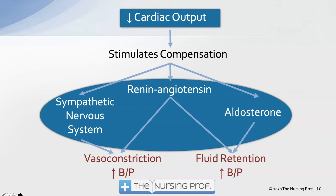I mentioned the compensatory mechanisms. Whenever there's a decrease in cardiac output, we have three main systems that are stimulated: the sympathetic nervous system, the renin-angiotensin system, and aldosterone. The sympathetic nervous system tells the heart to beat harder and faster. In decreased cardiac output that would be a good thing — we'd be increasing cardiac output. Heart rate is a component of cardiac output, so the sympathetic nervous system increases blood pressure by increasing cardiac output and also causes vasoconstriction, which increases our afterload.